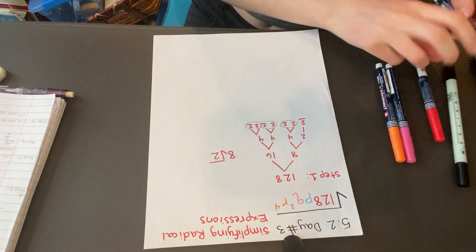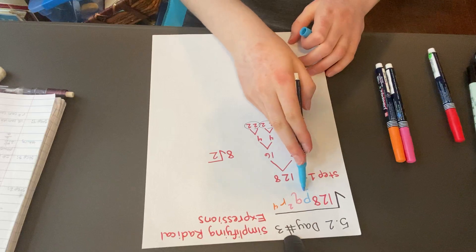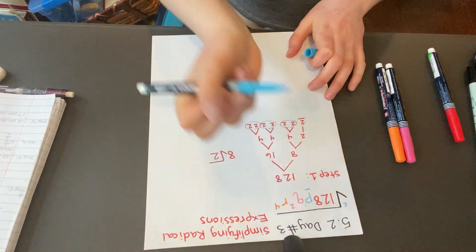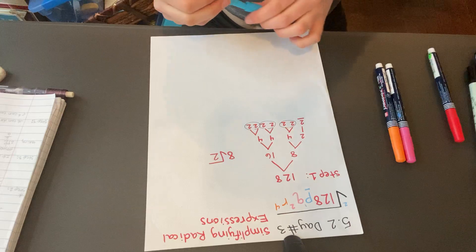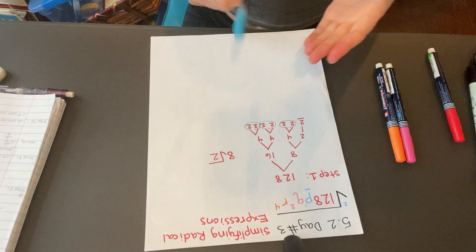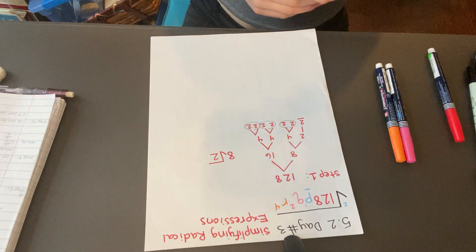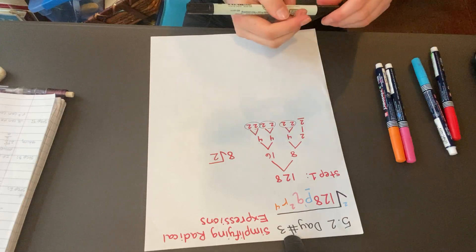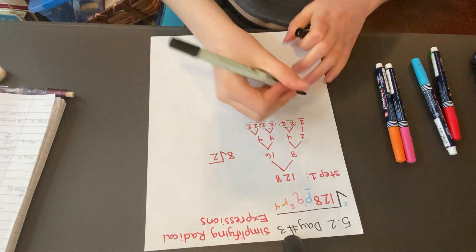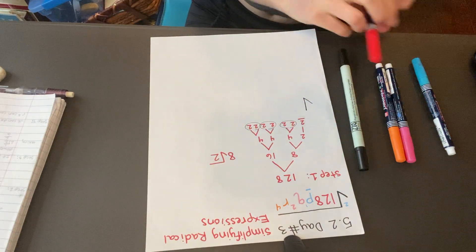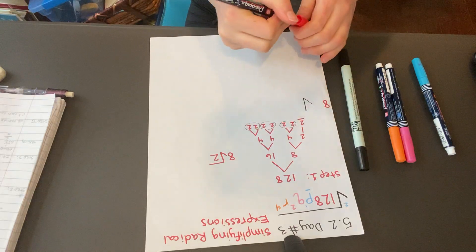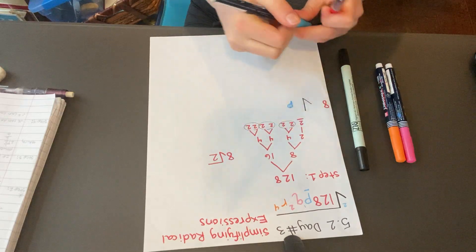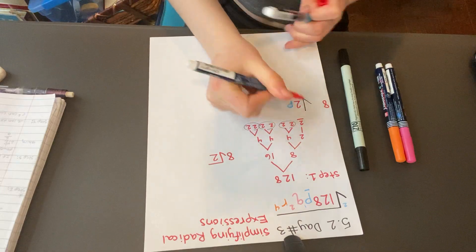Next, we're going to simplify the P. The P in this problem is just to the 1st power. Since there's a 2 out front of the example problem, we can think of P as P to the 1st. 2 does not go nicely into 1. The 1 is smaller than the 2, so the P just stays under the radical. We have the square root, and we have 8, and then P, and then the 2. That's all we have so far.